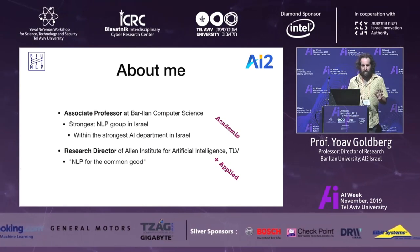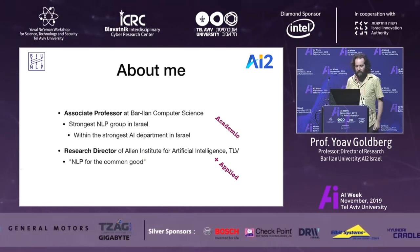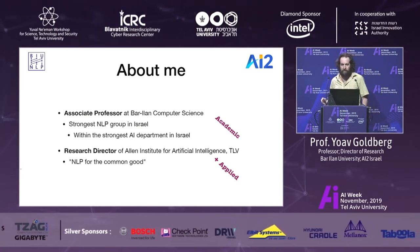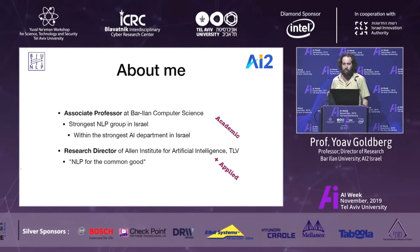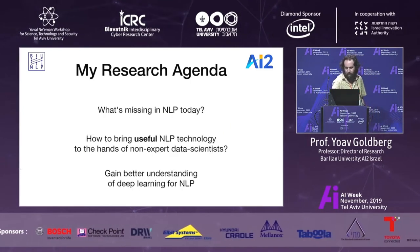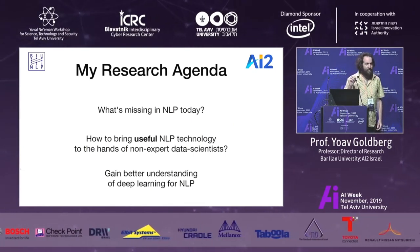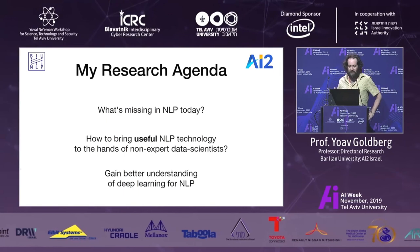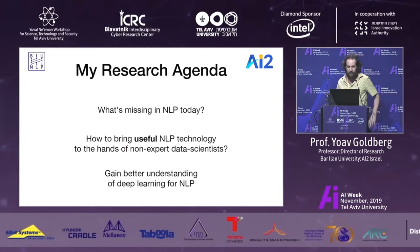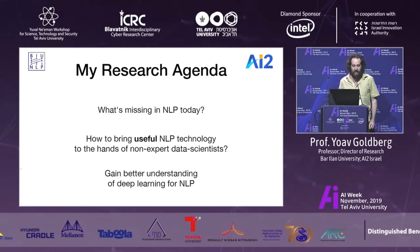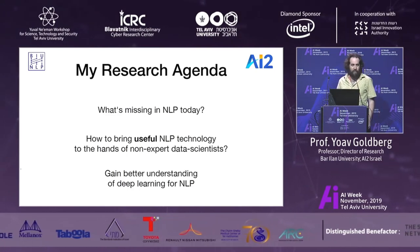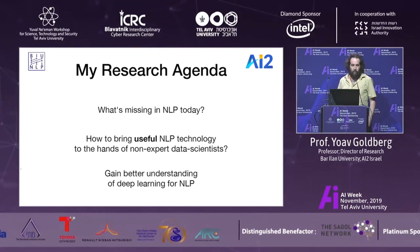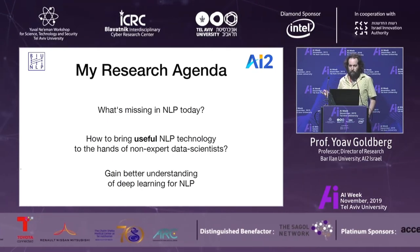A few words about me. I have two affiliations: one academic — a professor at Bar-Ilan — and the other more applied. I'm a research director at AI2 Israel, a non-profit organization developing NLP for the common good, tools that people can actually use. My research agenda is to figure out what is missing in NLP today and how to bring useful NLP technology to non-expert data scientists. The other strand is to understand what deep learning models for NLP actually do, because they work pretty well but we have no idea why or how.